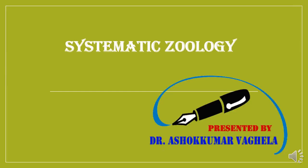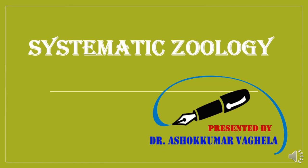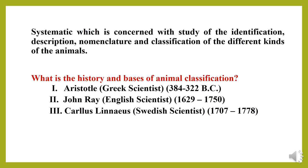Today we discuss systematic zoology and the basis of animal classification. Systematics is concerned with the study of identification, description, nomenclature, and classification of different kinds of animals. The animal kingdom is well arranged and systematic. For systematic study, different animals are divided into minor and major groups on the basis of similarities and differences, and each group is given a particular name.